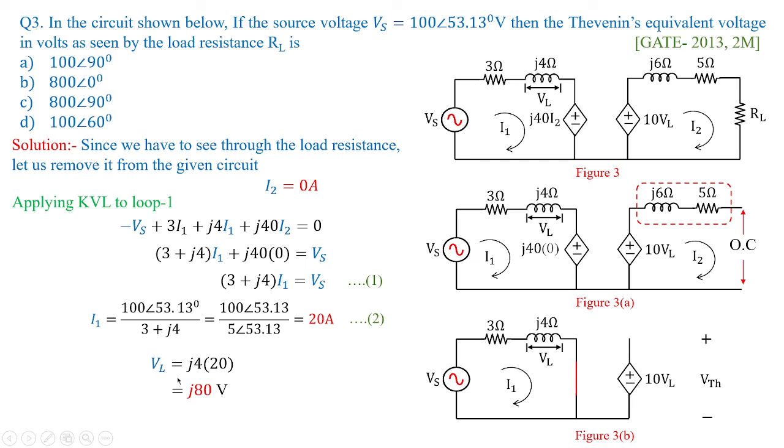Anyhow, we need to calculate Vth. That Vth is equivalent to 10VL. In fact, VL is nothing but 80J. Just substitute the value, you are going to get the value of the Thevenin's voltage as 800 volts J, or in fact 800J volts. But this is not in the option. Why it is not in the options? Since we have framed the solution in rectangular form.